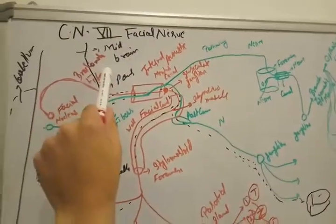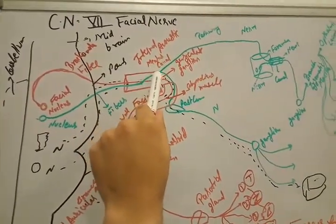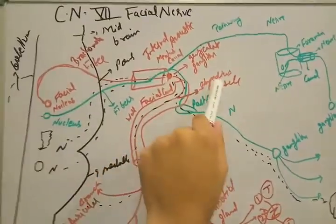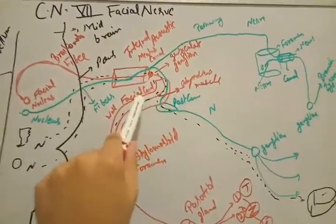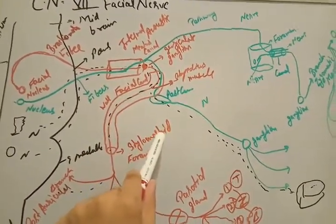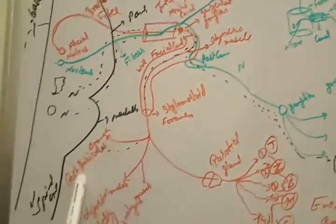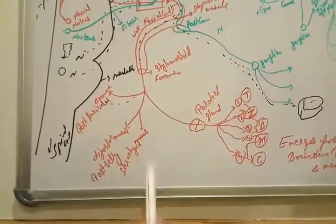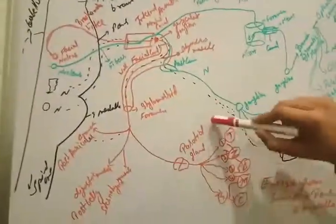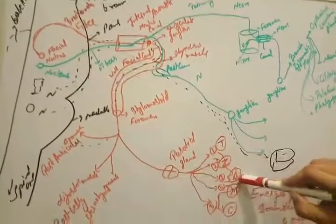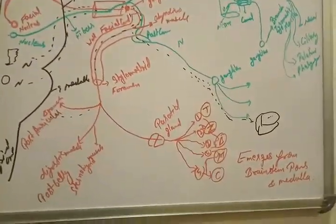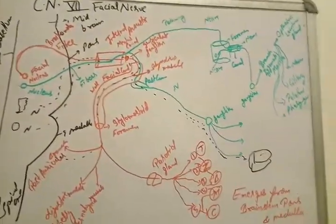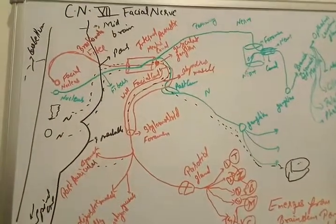So that is the facial nucleus and its supply. To summarize the branchial motor pathway: facial nucleus → branchial motor fibers → internal acoustic meatus canal → geniculate ganglion → facial canal → stapedius muscle (posteriorly) → stylomastoid foramen → posterior auricular branch, posterior belly of digastric and sternohyoid muscles → and through the parotid gland into temporal, zygomatic, buccal, marginal mandibular, and cervical branches.